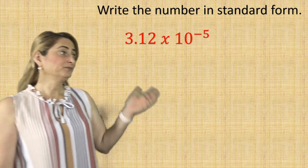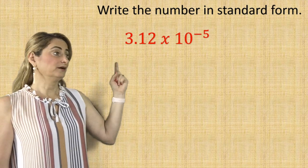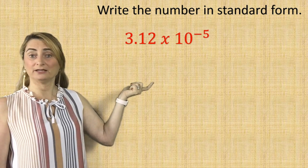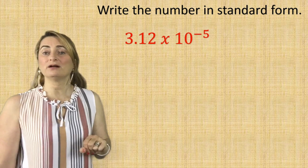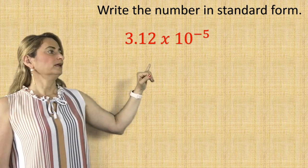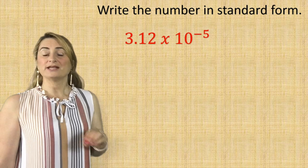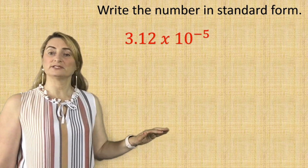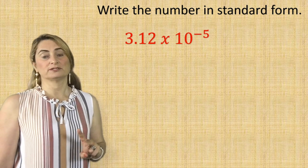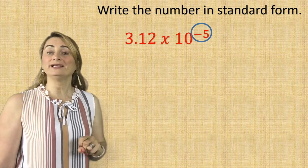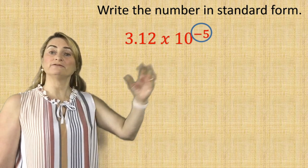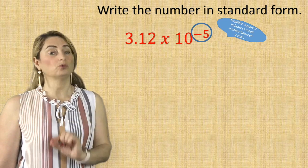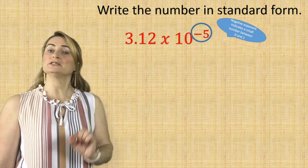Now here's an example — write the number in standard form. The number is in scientific notation because it has a factor between 1 and 9.9, multiplied by 10 to the power of negative 5. How do we change it to standard form? Standard form uses all the digits, which means you need to get rid of the power of 10. Your first clue is the exponent — since you have an exponent of negative 5, which means 10 to the power of negative 5, remember that a negative exponent means a small number between 0 and 1, so it's a decimal between 0 and 1.